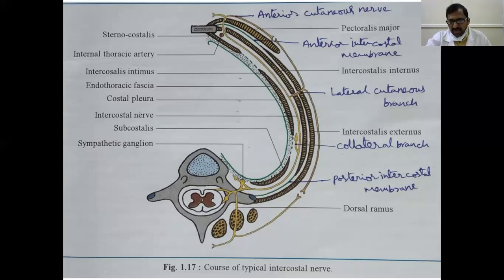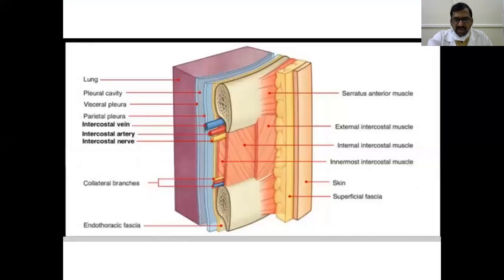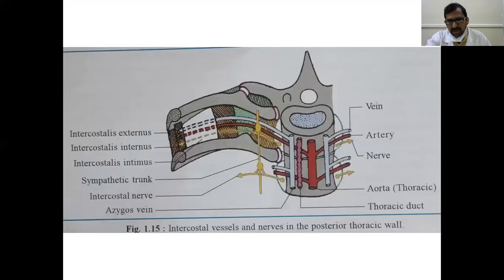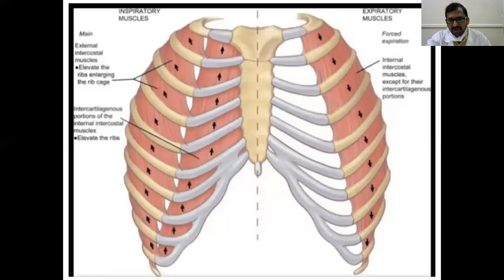The intercostal space is very, very important clinically. When introducing any needle or tube into the intercostal space, you must be very careful. Damaging blood vessels produces severe bleeding, and damaging the intercostal nerve leads to loss of sensation over that area. That is why the intercostal space is very, very important.